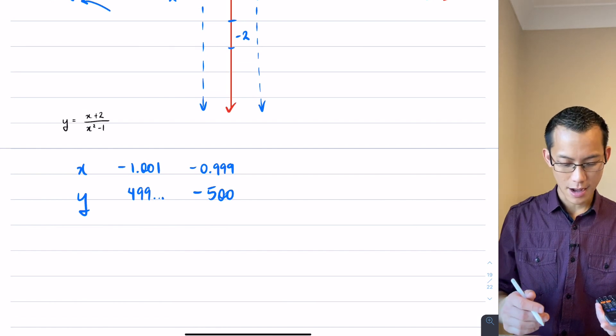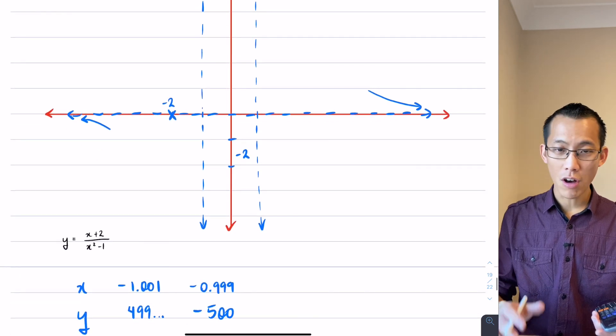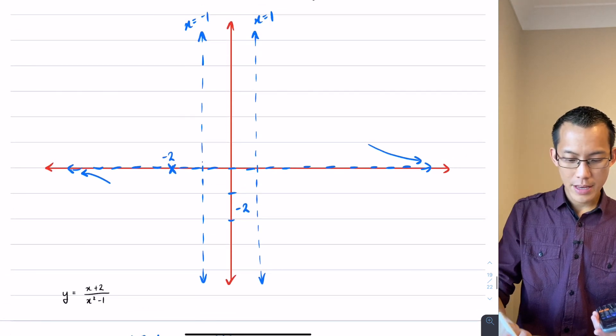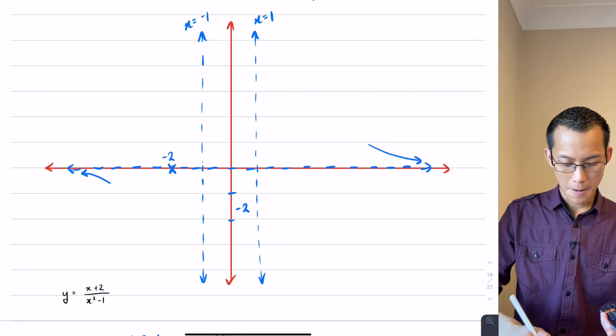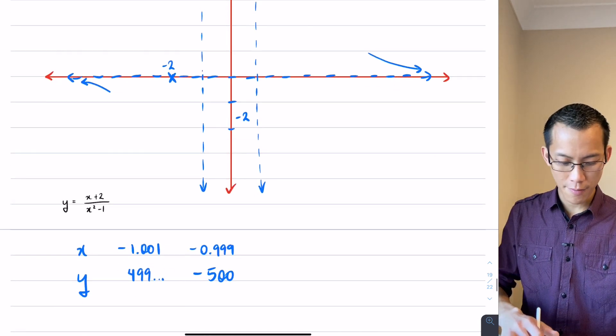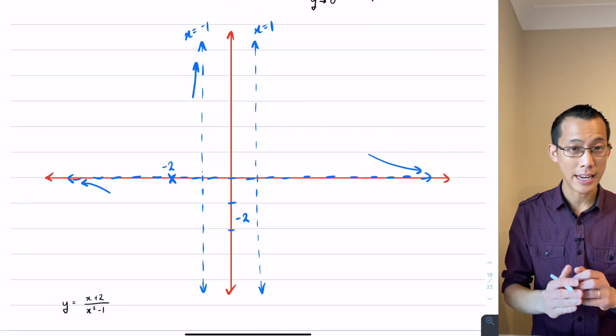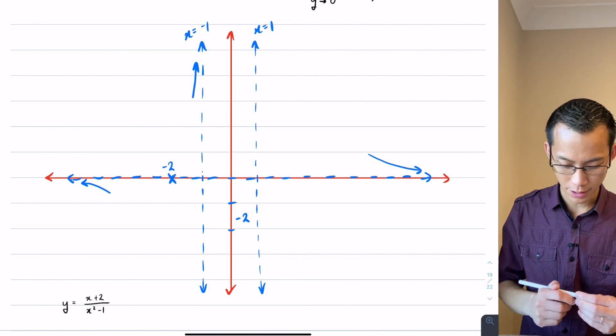Okay, what is this telling us, right? You're getting very very large values, right? 500 in the positive direction, 500 in the negative direction. So what's happening on either side of this vertical asymptote is, you have, number one, for this guy, this is a very large positive value, right? So therefore I'm going up like this.